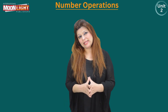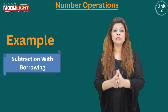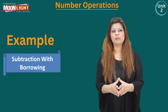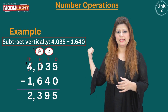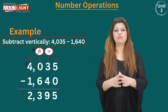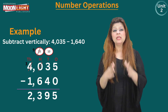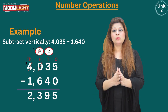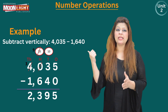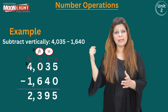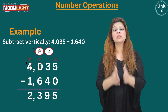Now I am going to solve an example of subtraction with borrowing, solved in vertical position. The statement of this example is: subtract vertically 4,035 minus 1,640. I write the first number on top and the second number below, according to the place value chart, then write the subtraction sign and draw a straight line. We start subtraction from the ones position.